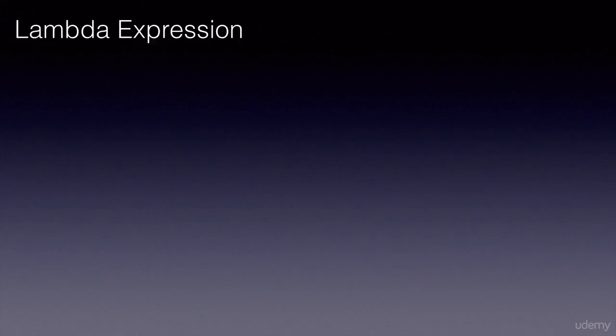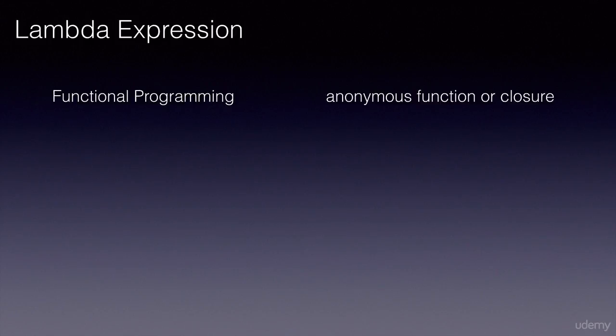The main goal of lambda expressions is to introduce the benefits of functional programming to Java. A lambda is an anonymous function in Java, i.e. a function which does not have a name, return type, and access modifiers.